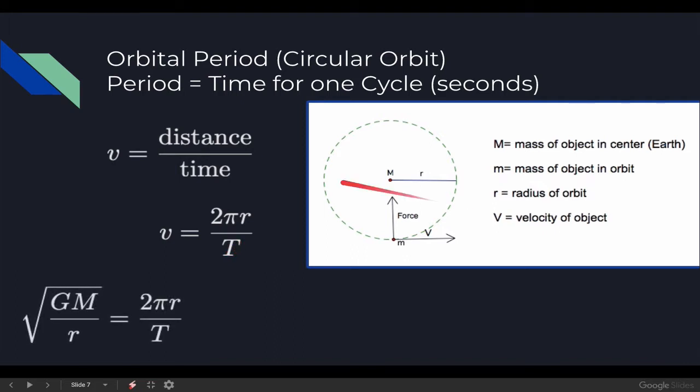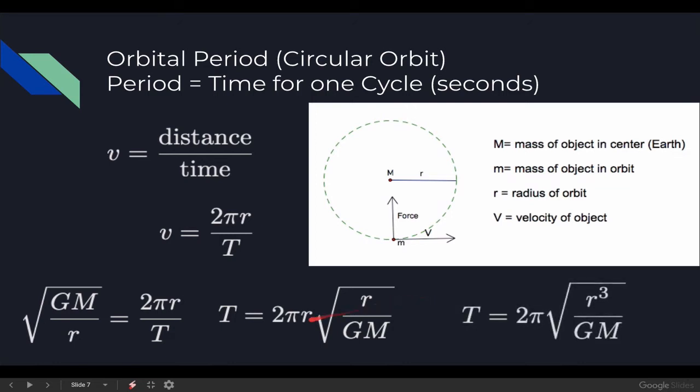We also just found an expression for the velocity of a satellite in circular orbit. So if we plug that in, do a few more algebra steps, we can then find an expression for the orbital period. We can either leave it in this form, 2 pi r times the square root of r over GM, or we can put that r underneath the radical. So we have 2 pi times the square root of r cubed over quantity GM.